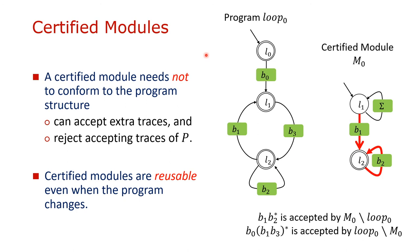Note that a certified module is allowed to not conform to the program structure. For example, consider this certified module — it accepts all traces starting from B1 and then repeating B2, but these traces cannot be simulated on the program automaton. Also, there is a trace on the program automaton that starts with B0 and then repeats B1 and B3, and these traces cannot be simulated on M0. So a certified module can accept extra traces and also reject accepting traces of the program automaton. This freedom in recognizing omega traces makes the certified module much more reusable even when the program changes.